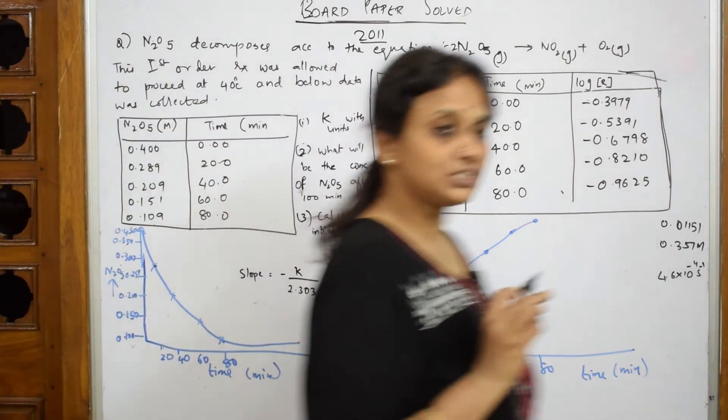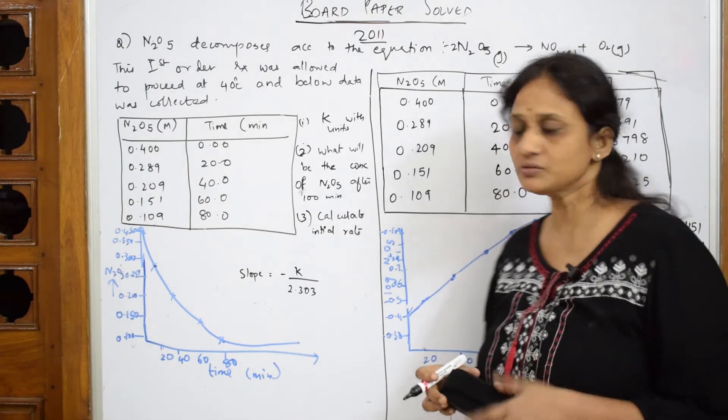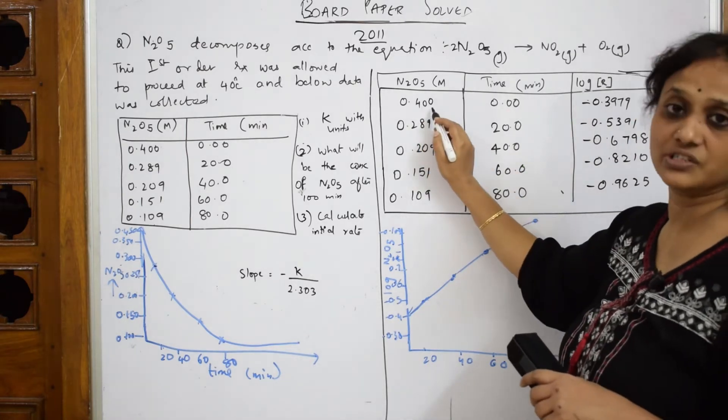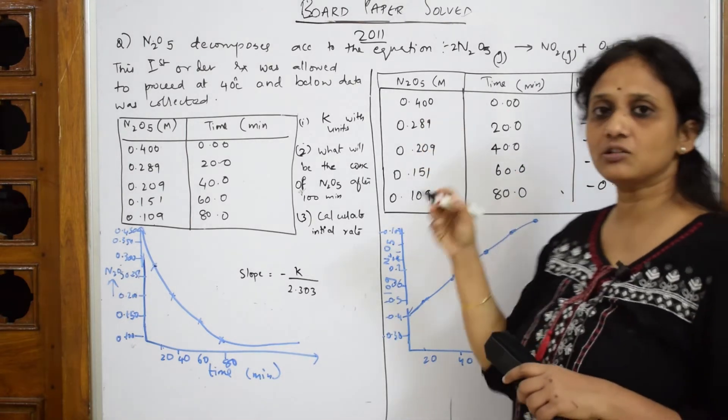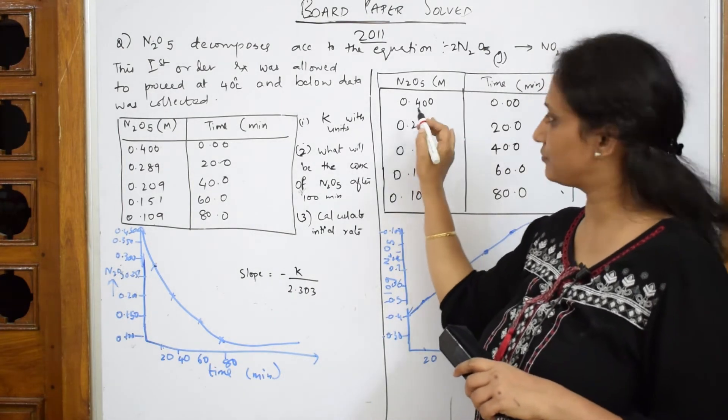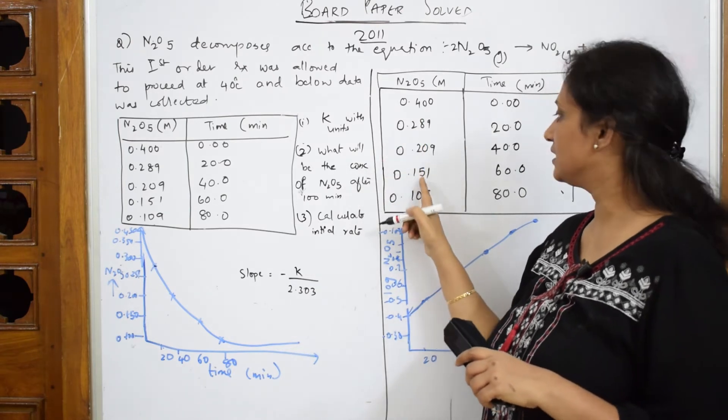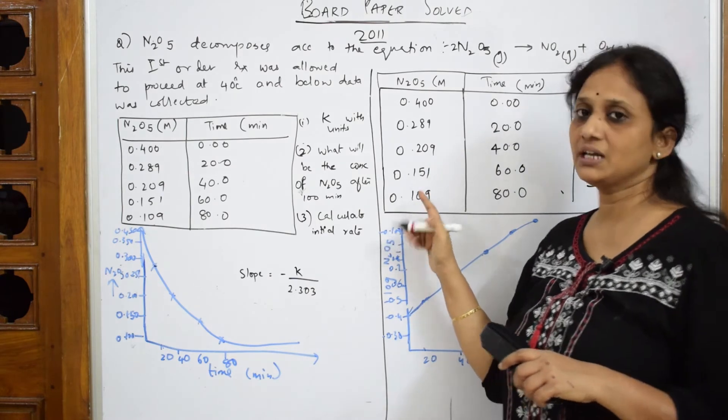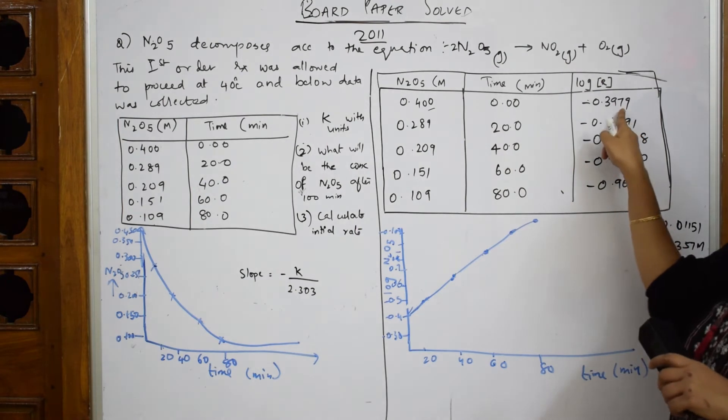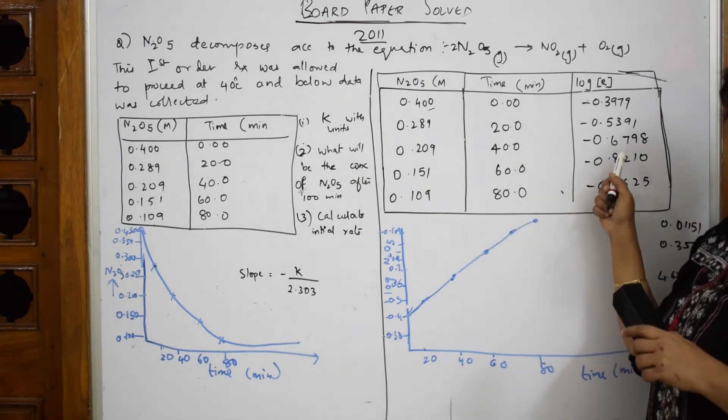After that, what should you do? Take the same table column. You will be given a log book in the exam. You write the same data. Now you are going to find out the log value of the initial concentration. That means, you are going to take your log book and just find out log 0.400. Just 40 and 0, find the log. Find the log for 289, find the log for 209, 151, 109. You will be getting the values like this. Directly, please apply all the three numbers. You will be getting log values. Record all the log values and keep it. Why did I do that? I will tell you.